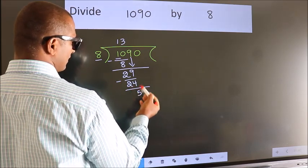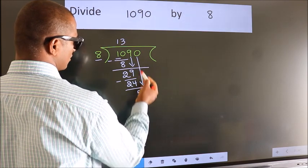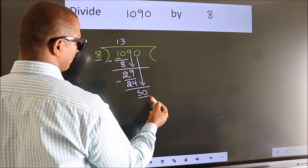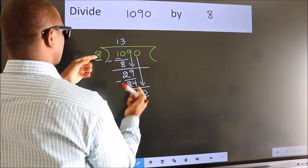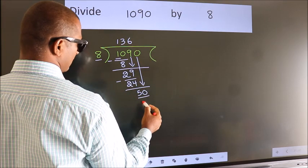After this, bring down the number beside it. So 0 down, making 50. A number close to 50 in the 8 table is 8 sixes, 48.